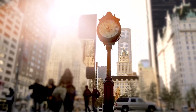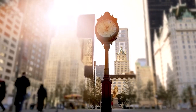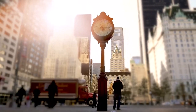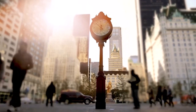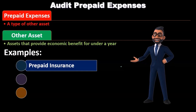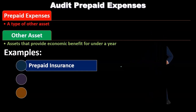Typically, when we're talking about large companies, they'll be buying insurance that might be at least a year into the future. Why? Because it's typically cheaper to do that rather than pay on a month-to-month basis. We need to consider in that case the prepaid insurance.